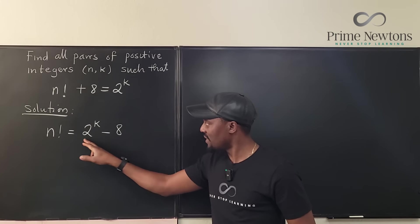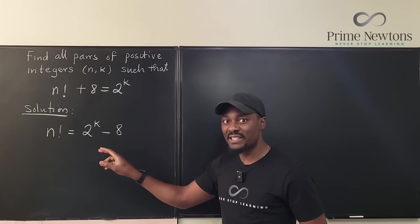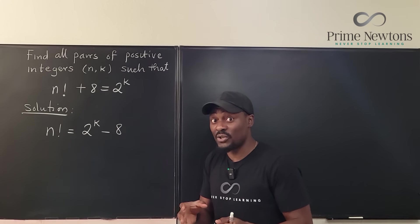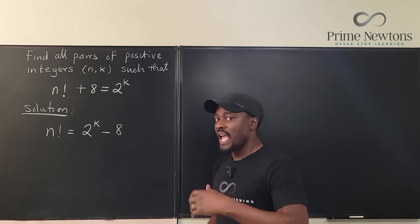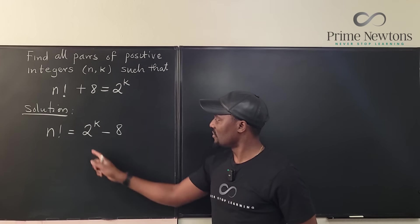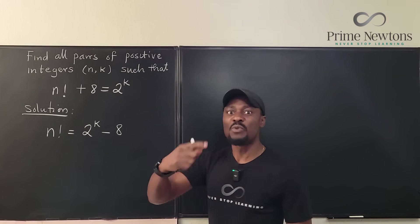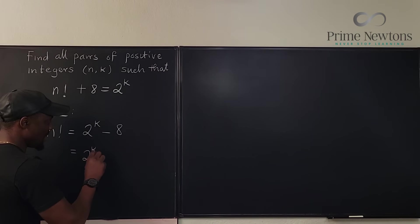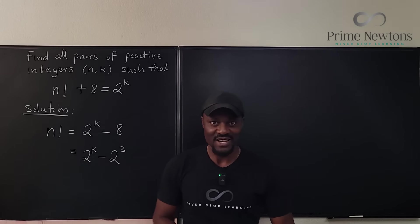Writing a difference as a product requires that we factor something out. Whenever I factor with even numbers, it looks like two. Let's rewrite this as 2 to the k minus 2 to the third.